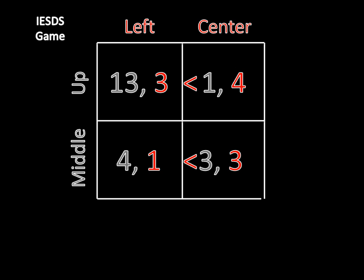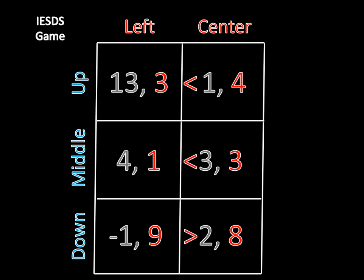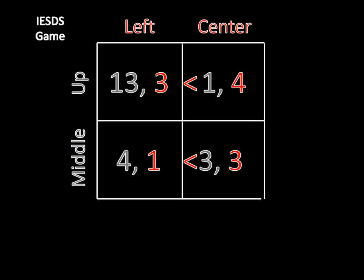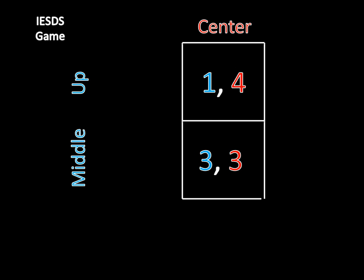And now we can note that center strictly dominates left for player two as four is greater than three and three is greater than one. Which wasn't the case again just a moment ago, because eight is definitely not greater than nine. But we can eliminate this nevertheless due to the rules of strictly dominated strategies, leaving us with this game remaining.